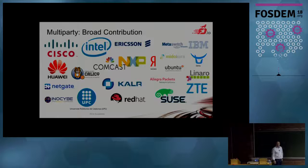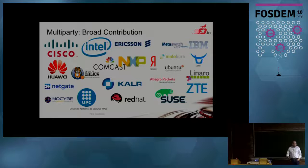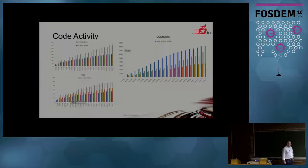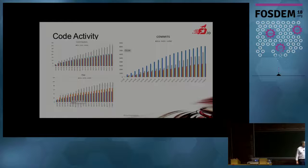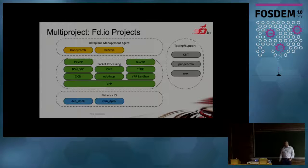The FD.io project is actually a multi-party project with many people coming from many companies contributing — Intel, ARM, Ericsson, and many others. It's a very active project. Comparing three projects in the same domain — OVS, DPDK, and VPP — and looking at number of commits, VPP is clearly a very active project.